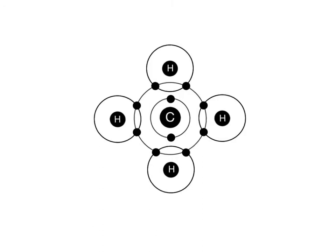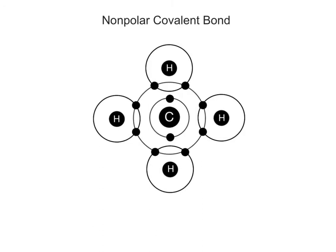In covalent bonds, electrons can be shared equally or unequally between two atoms. A nonpolar covalent bond forms when two or more atoms share electrons equally. Both atoms have the same level of attraction for the shared electrons. Methane is an example of a molecule held together by nonpolar covalent bonds. The term nonpolar means that there is no electrical charge — no region of the molecule is any more positive or negative than another. Nonpolar covalent bonds often occur between the same atoms, such as those in hydrogen gas, oxygen gas, and nitrogen gas.